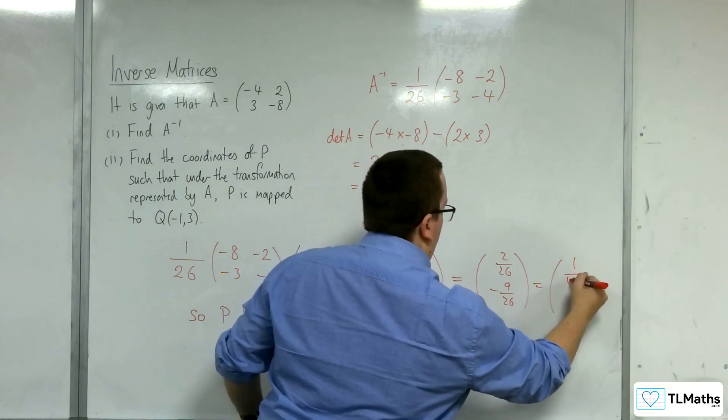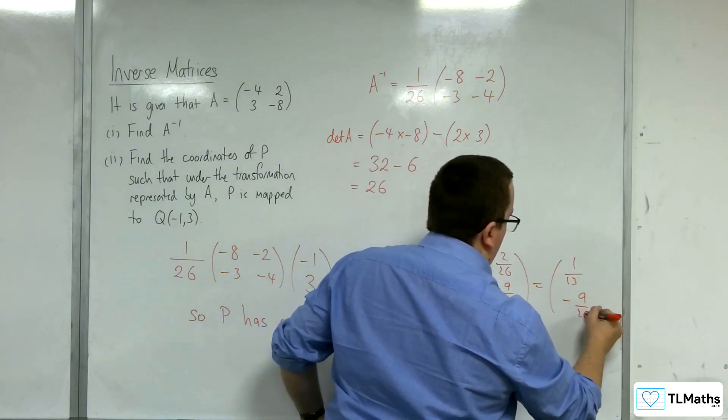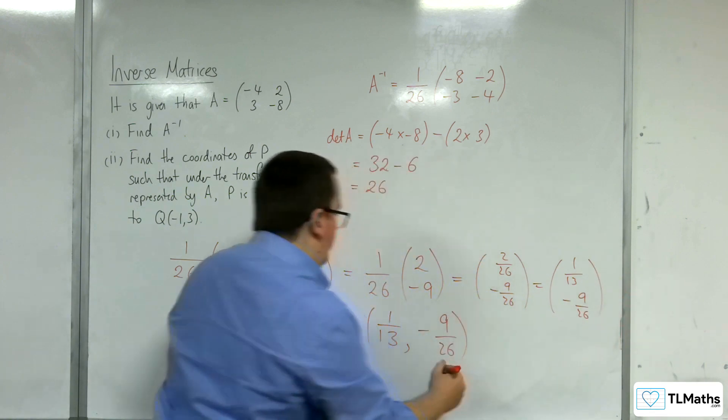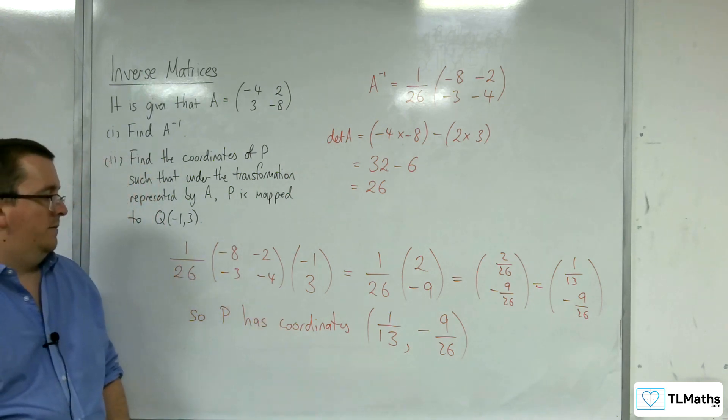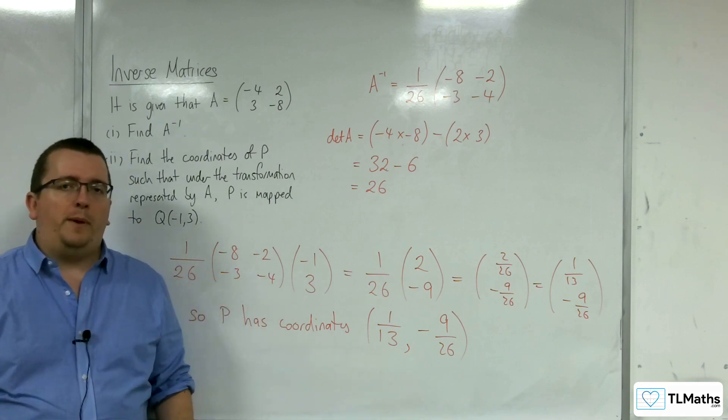That, of course, simplifies to 1 over 13, and that stays, it can't be simplified. And so, this is the coordinates of P. So we applied the inverse matrix to Q to get ourselves back to the coordinates of P.